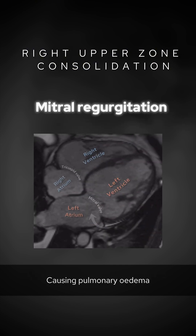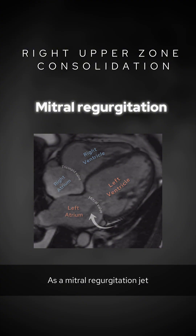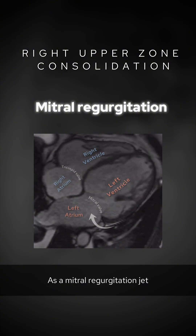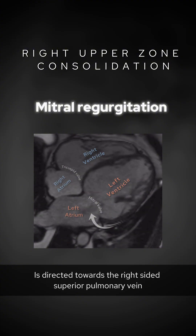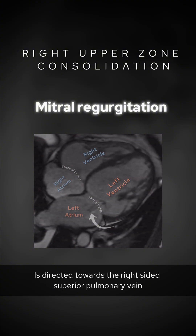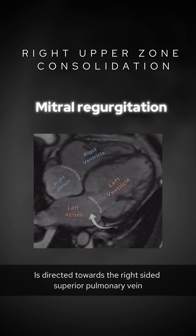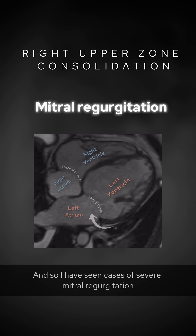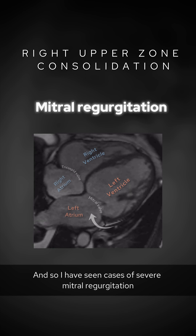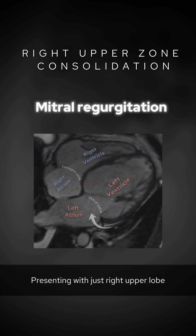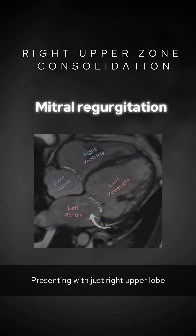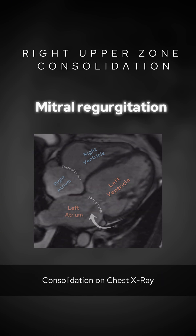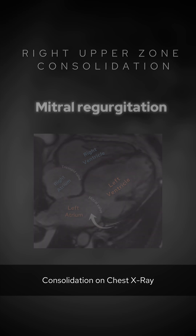Consolidation mainly seen within the right upper zone can suggest mitral valve regurgitation causing pulmonary edema, as the mitral regurgitation jet is directed towards the right-sided superior pulmonary vein. I have seen cases of severe mitral regurgitation presenting with just right upper lobe consolidation on chest x-ray.